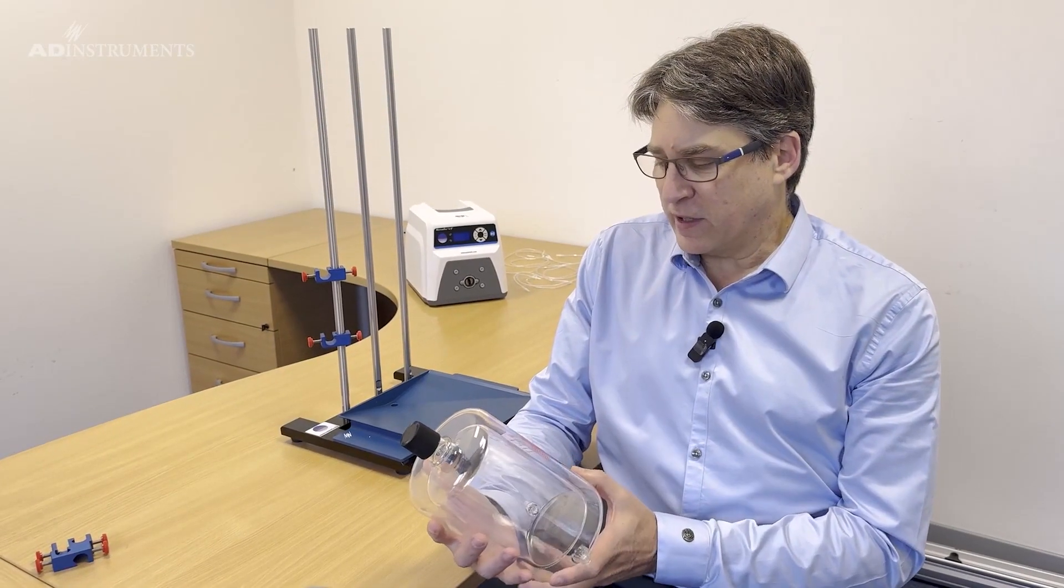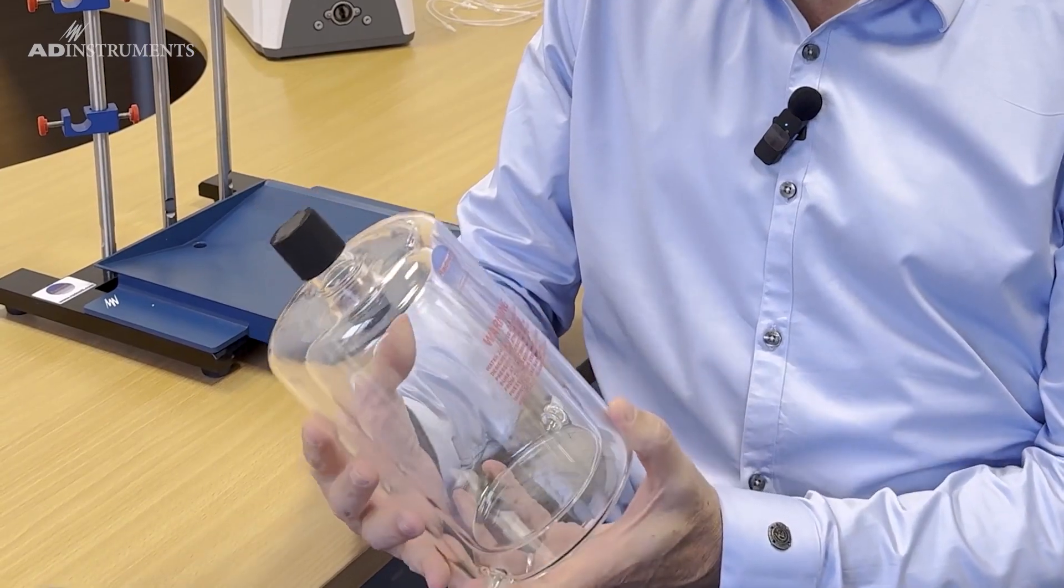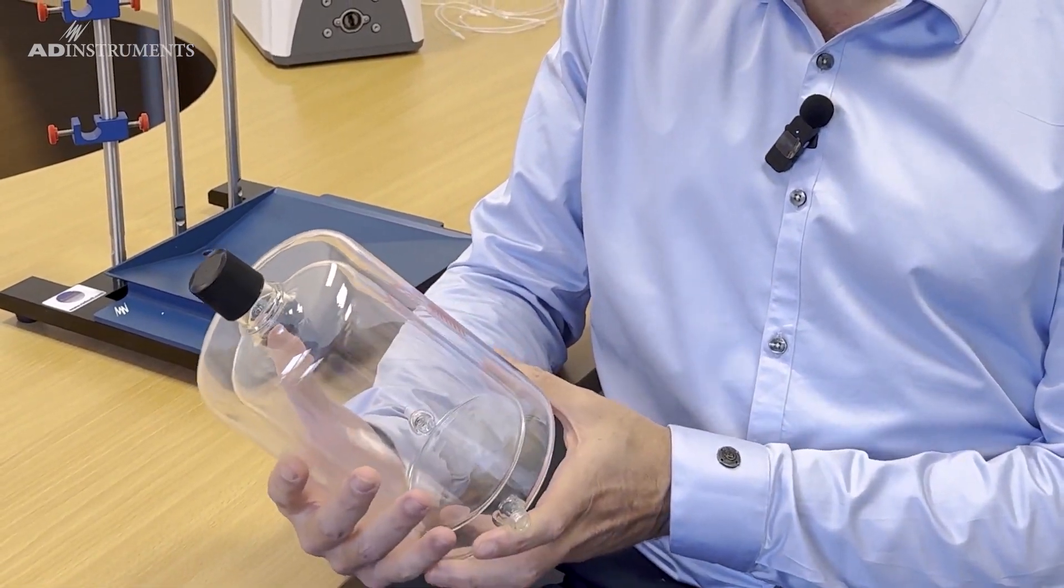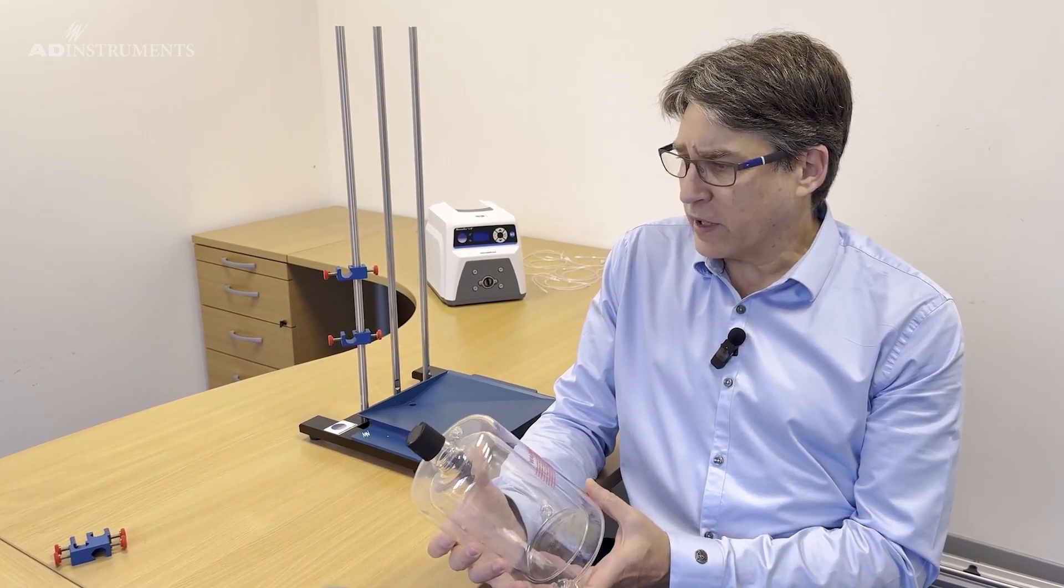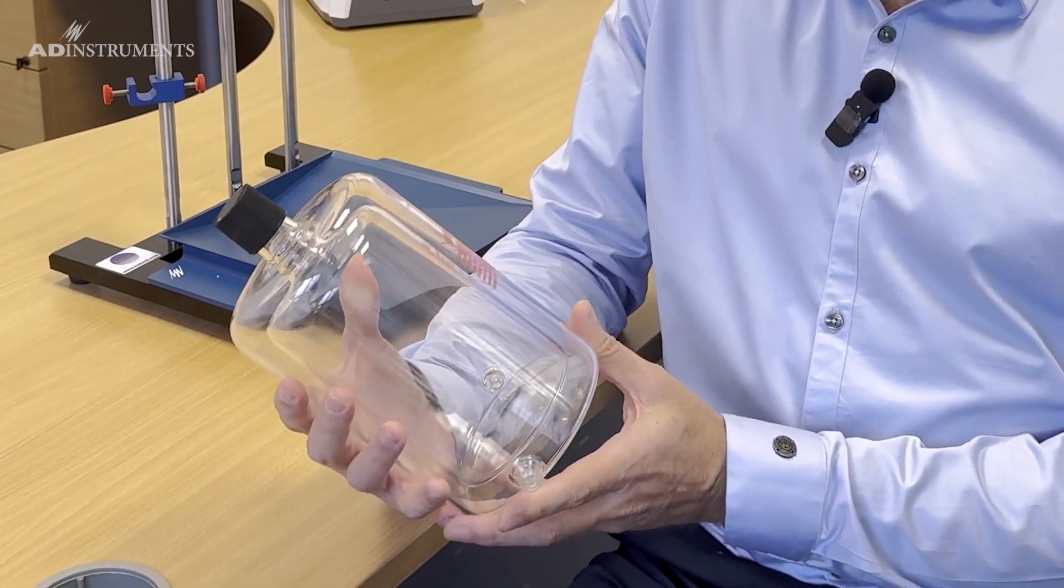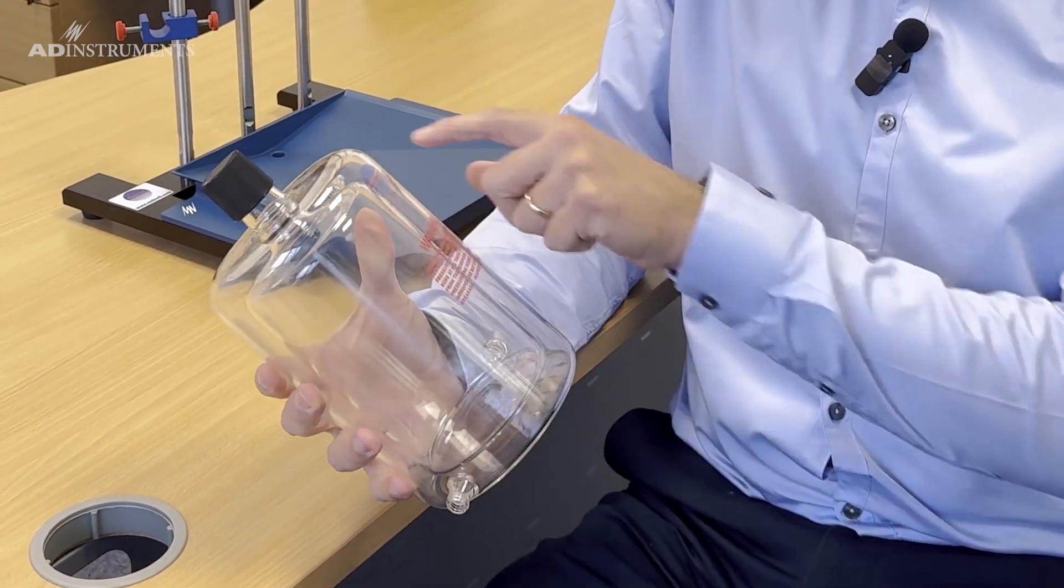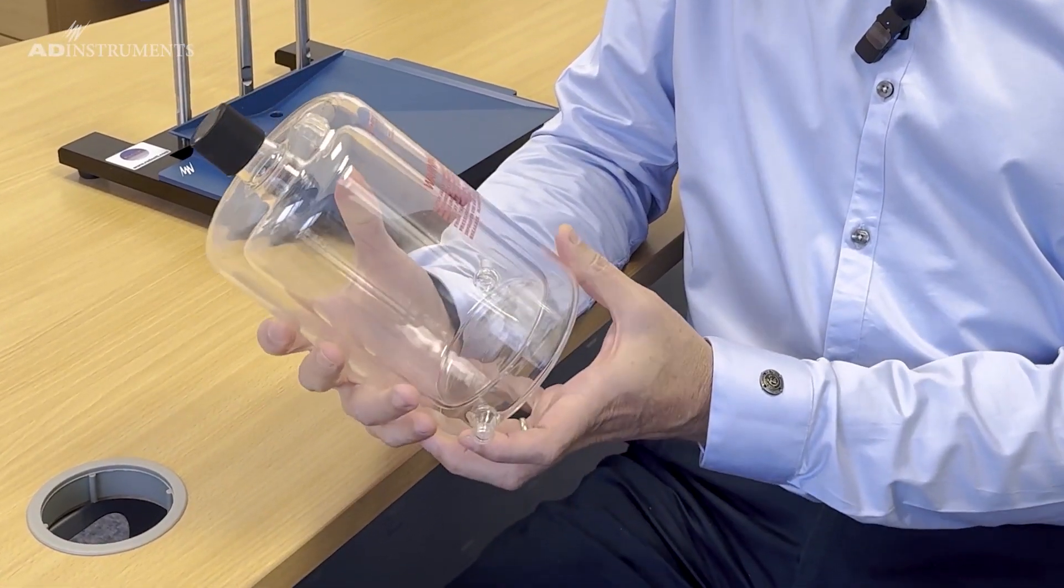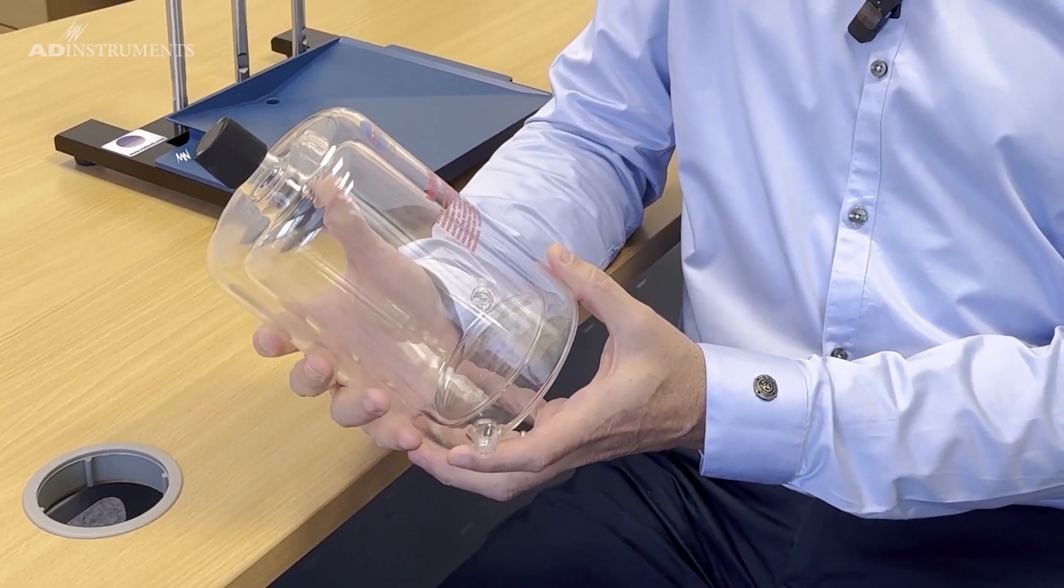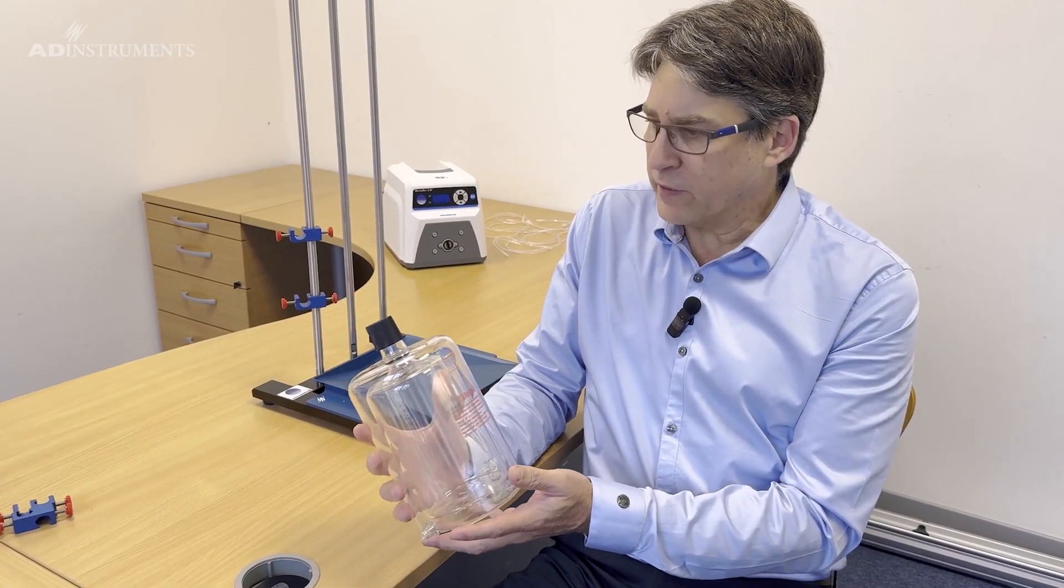The next component is the perfusate reservoir which as the name suggests holds the perfusate. The system allows for two of these in case you want to swap between perfusates or if you have a high flow application. The reservoir is water jacketed which allows warm water through the inlet and outlet ports to surround the perfusate to keep it at the correct temperature, and it also has an output port for the perfusate to supply to the system.